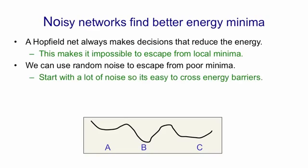Rather than using a fixed noise level, the most effective strategy is to start with a lot of noise, which allows you to explore the space on a coarse scale and find the generally good regions of the space, and then to decrease the noise level. With a lot of noise you can cross big barriers; as you decrease the noise level you start concentrating on the best nearby minima.